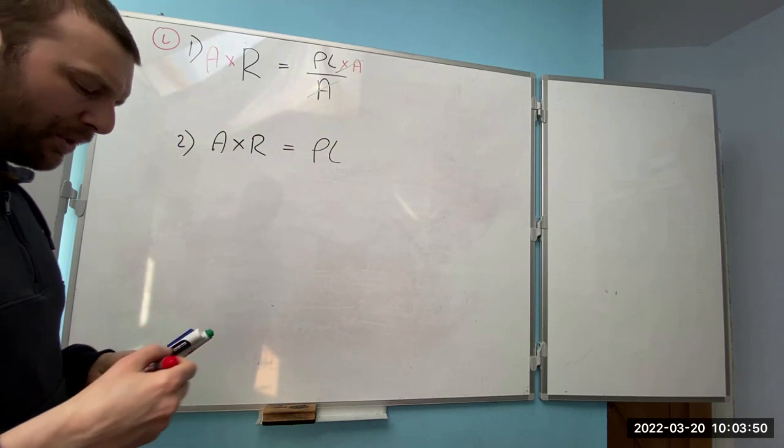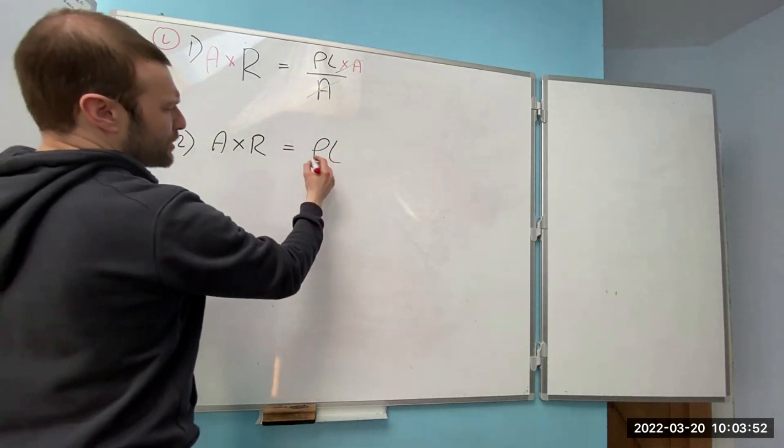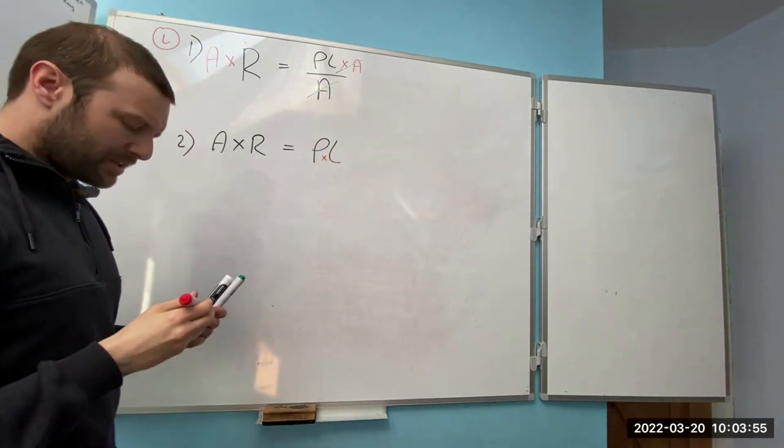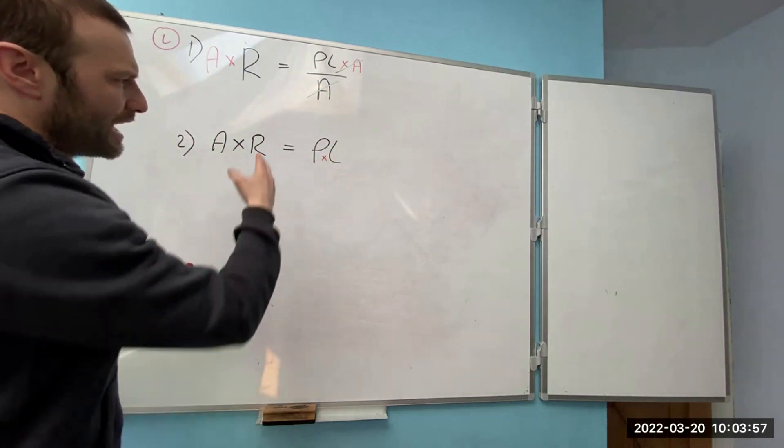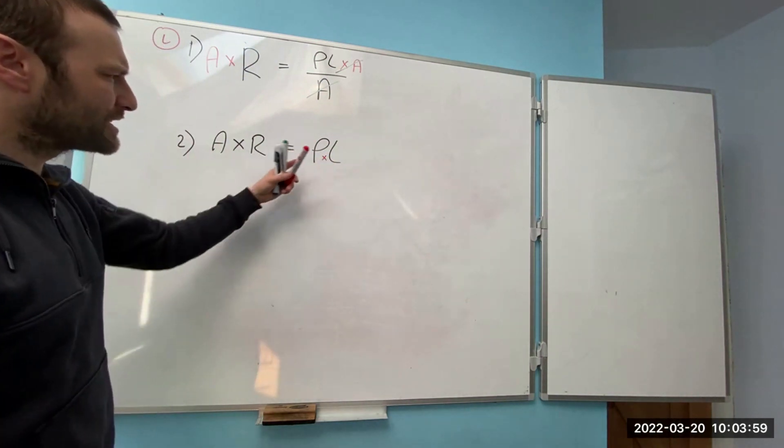You should also know by this video that when you've got two next to each other like this it's assumed that they're times each other. So ρ times L. I've got resistivity times length.